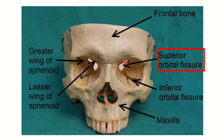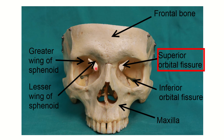In this picture we can see the superior orbital fissure — this part here. The superior orbital fissure is located and can be seen both in the orbital cavity and the cranial cavity. It lies between two bones: the lesser wing of the sphenoid and the greater wing of the sphenoid. So the superior orbital fissure is located between the greater wing and lesser wing of the sphenoid bone.